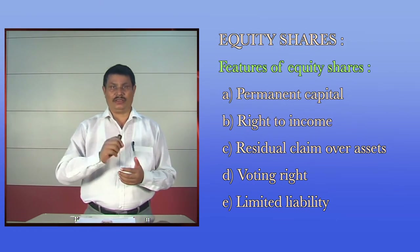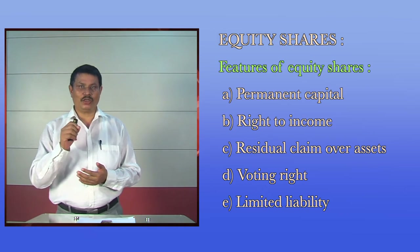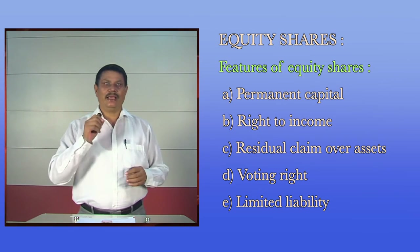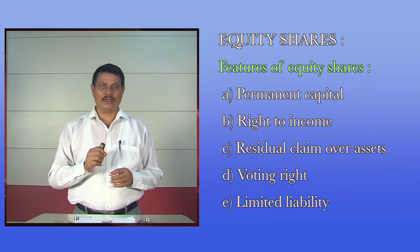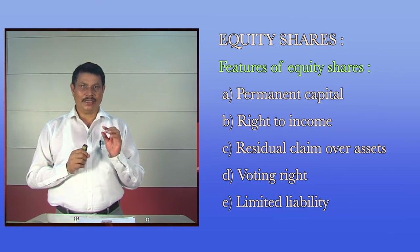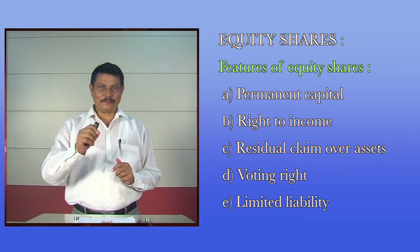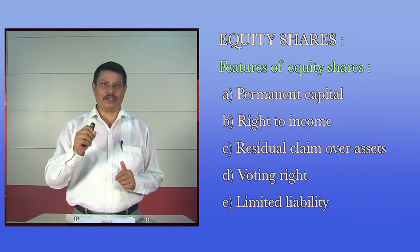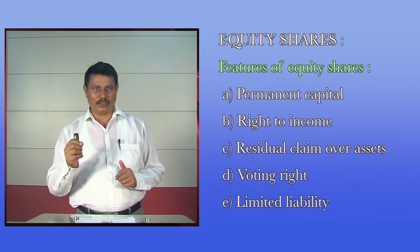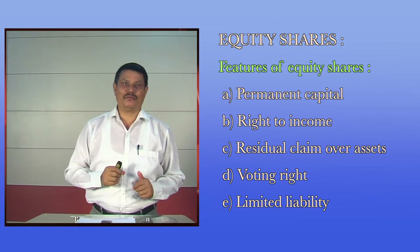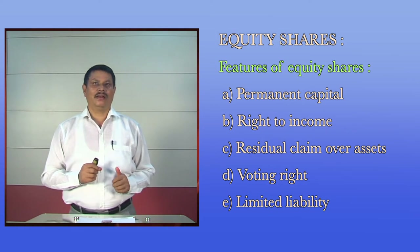Equity shares are those which do not impose any obligation on the company to pay a fixed rate of dividend to their holders. Equity shares give voting rights to their holders. Equity shareholders are the actual owners of a company. The rate of dividend paid to equity shareholders depends on the profit of the company — more profit means more dividend, and less profit means less dividend.